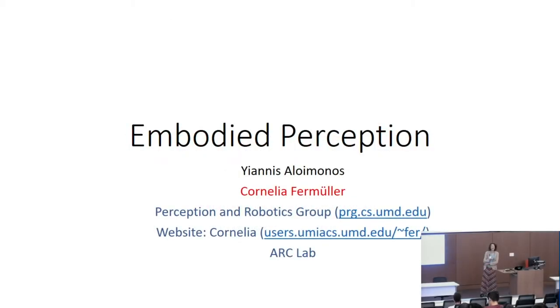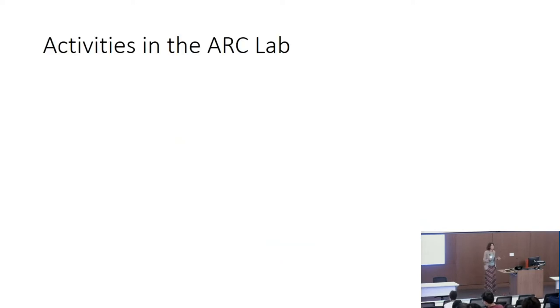Hello. I'm introducing the Perception and Robotics Group. That's Yanis Alimonos and myself, Cornelia Firmüller, and we are working on vision, but vision for systems. So we consider vision and motion together. Perception doesn't exist in isolation, but systems have vision in order to do things, in order to move. So that's the common philosophy. And the activities in our lab right now, the Arc Lab, center around two things.